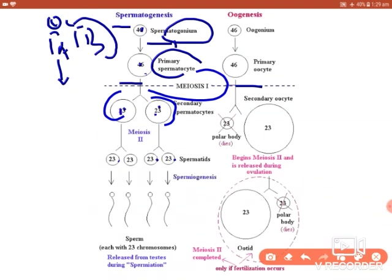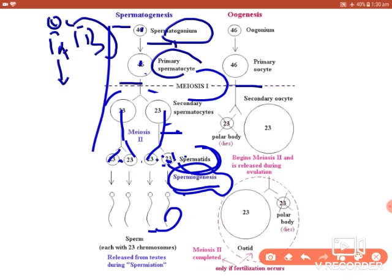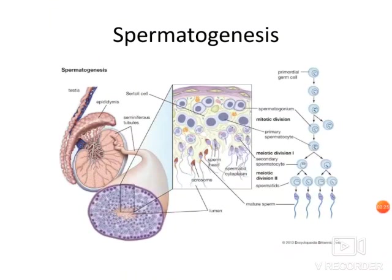The chromosome number becomes half in the secondary spermatocytes. Then the secondary spermatocytes undergo the second meiotic division and form spermatids — one produces two each — with no change in chromosome number. The spermatids then mature to form the mature sperm; that process is called spermiogenesis. The entire process from spermatogonium to sperm is spermatogenesis.